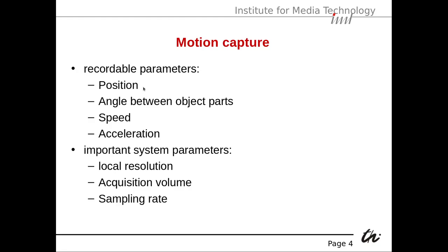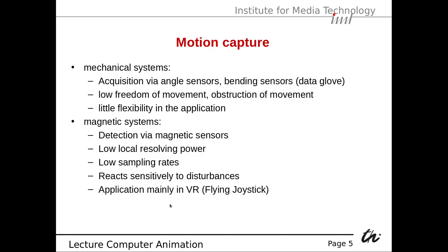In motion capture, recordable parameters are the position, the angle between object parts, the speed, and the acceleration. Important system parameters are the local resolution, the acquisition volume, and the sampling rate — that is, how often you sample the data.